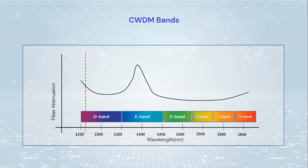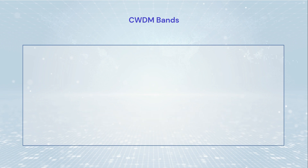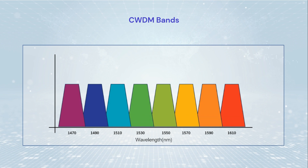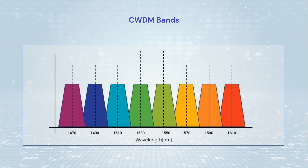CWDM is standardized to have 18 different wavelength channels starting at 1270 nanometers and ending at 1610 nanometers. Most systems use the eight channels in the upper band, from 1470 nm to 1610 nanometers. CWDM has a wider channel spacing of 20 nanometers.